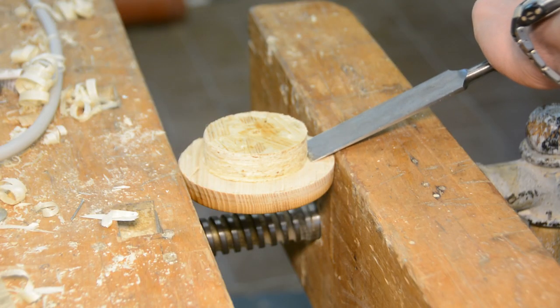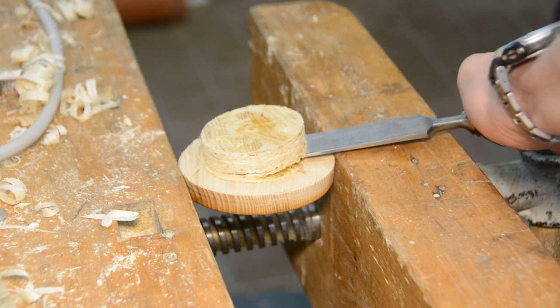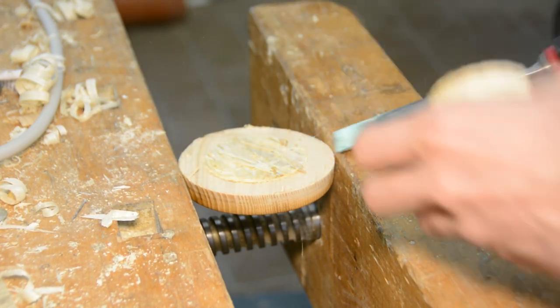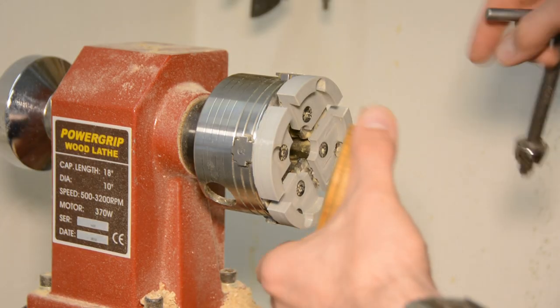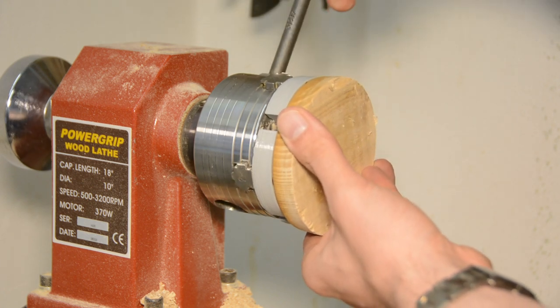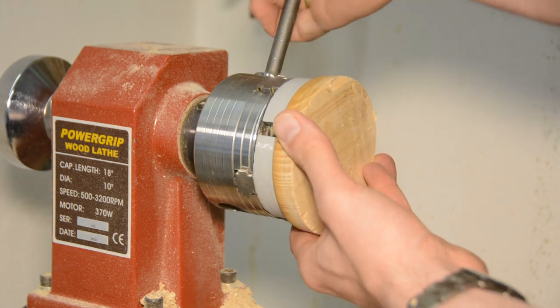With a chisel I can easily pop off the temporary tenon. The new tenon is now used to hold the lid in the chuck while working on the top side of the lid.